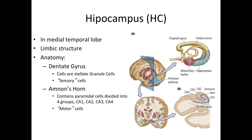CA1 cells project to another part of the temporal lobe called the subiculum. The subicular cells project back to the temporal cortex and forward to the thalamus and brainstem. In a coronal slice, the hippocampus can be seen in blue, and in detail the information flows from the dentate gyrus to CA4, CA3, CA2, and eventually to CA1.